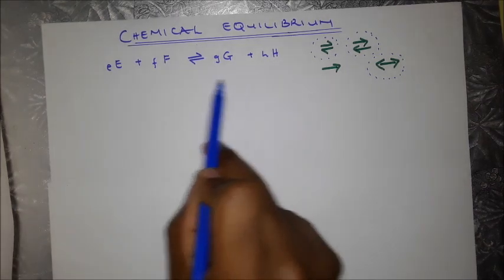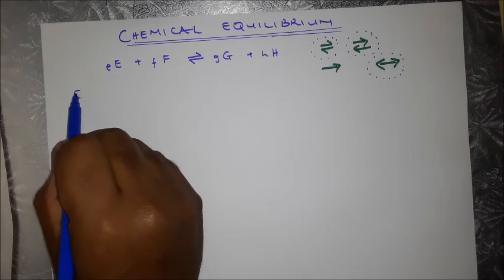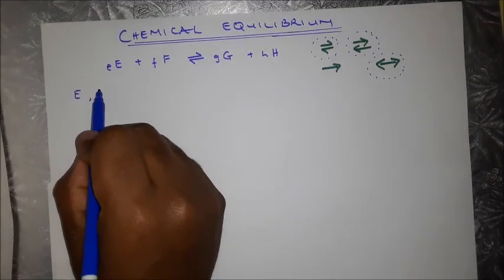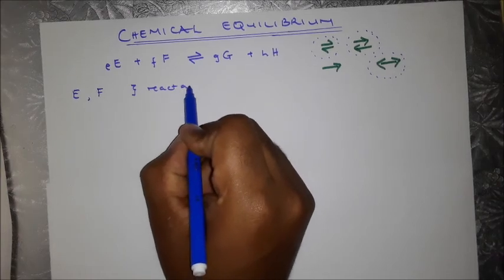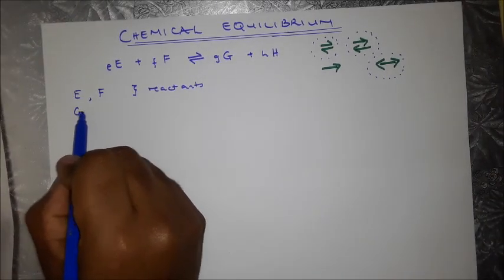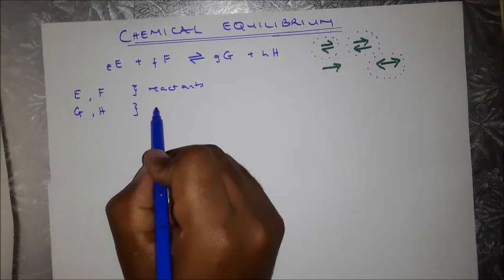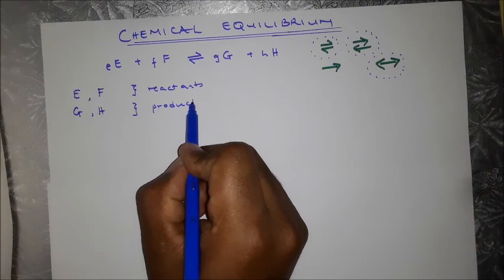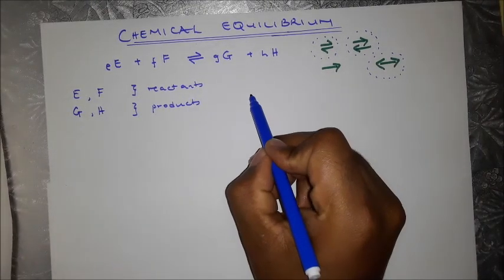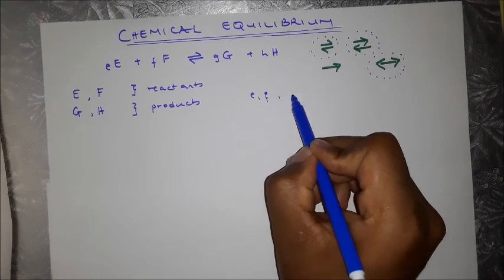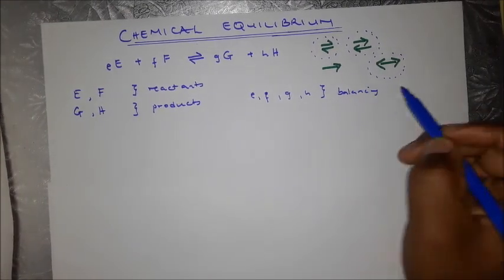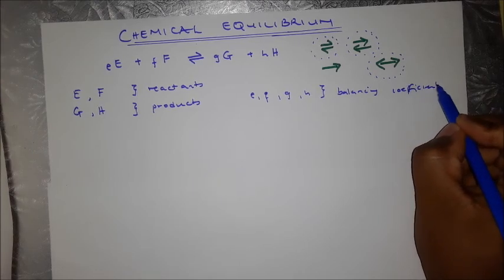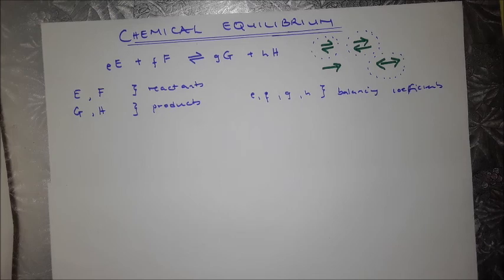Looking at this reaction, you might be asking what the capital letter E and F are — those stand for the reactants. Then G and H are the products. The small letters — small e, small f, small g, and small h — those are the balancing coefficients.